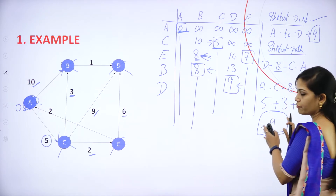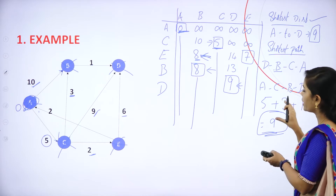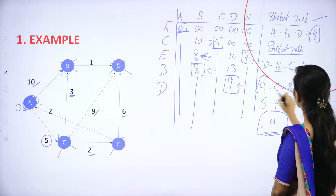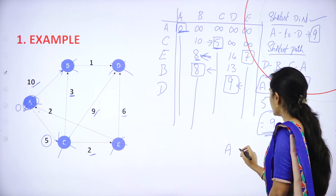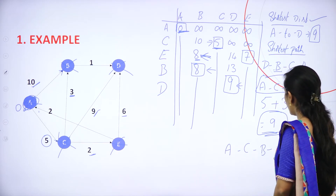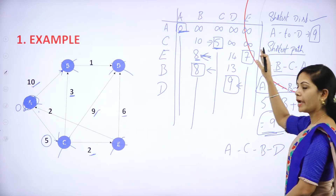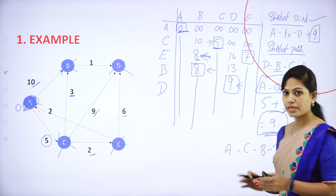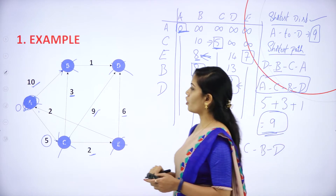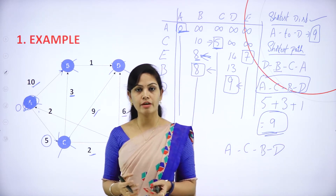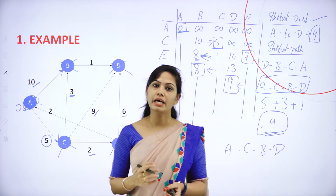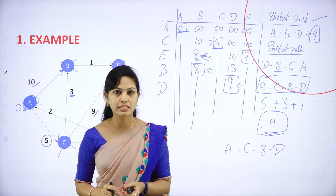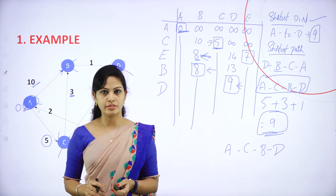We got the same distance value 9, so the path is verified. The shortest path from A to D is A, C, B, D. We can use directed or undirected graphs for finding shortest path and shortest distance in Dijkstra's algorithm.